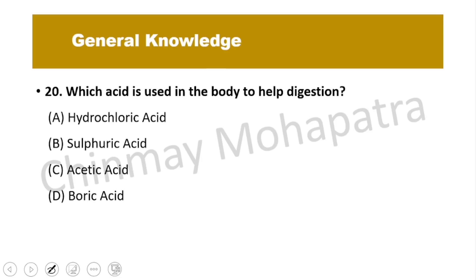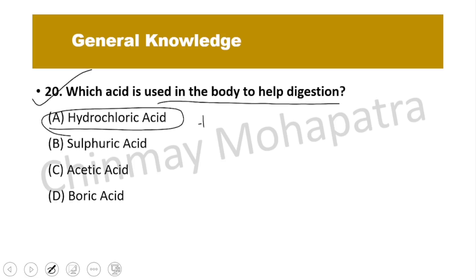Question number 20: Which acid is used in the body to help digestion? The answer is hydrochloric acid — HCl — which helps in digestion.